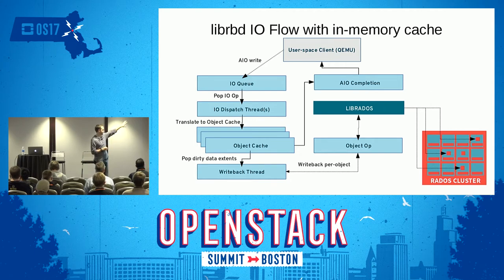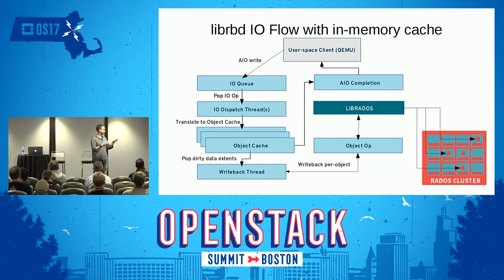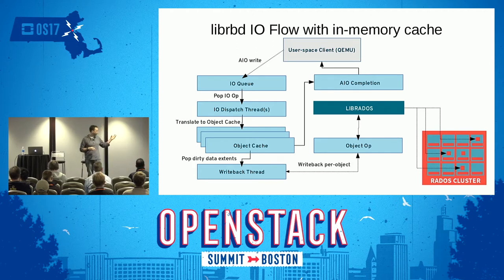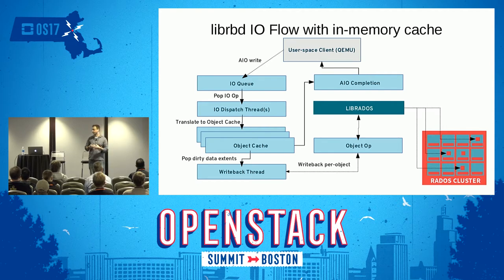Visually, the modified IO flow with the in-memory cache: instead of breaking requests up into per-object requests, we have a per-object cache. Requests populate the per-object cache, and in write-back mode that completes the IO operation back to the client. Eventually a write-back thread worker pulls dirty extents out of the cache, tries to consolidate them as a single per-object operation to send to LibRADOS, and can send multiple operations in-flight concurrently.